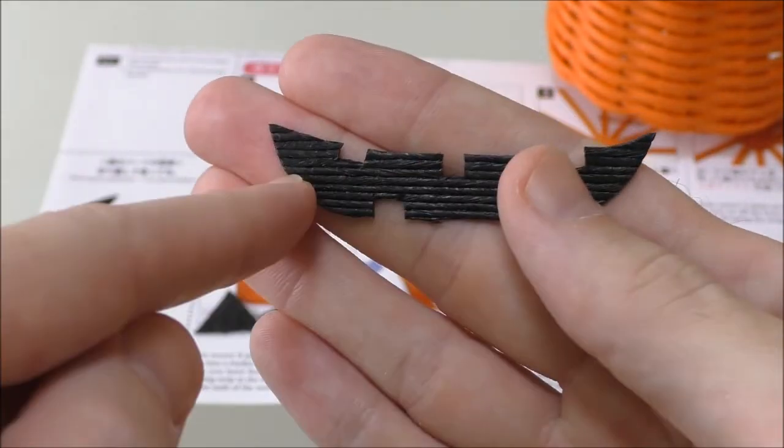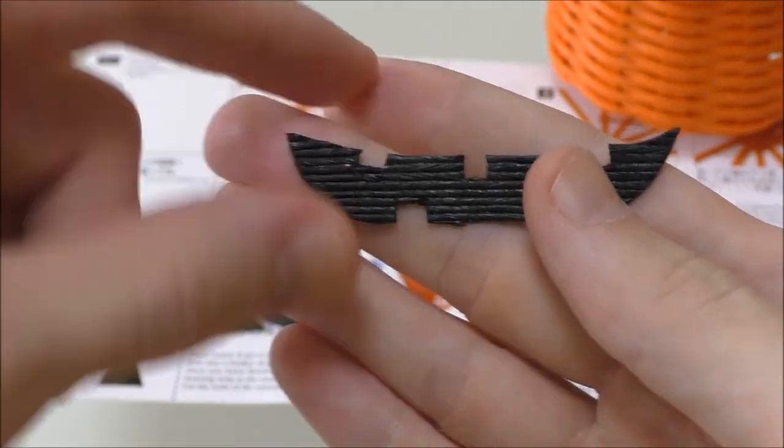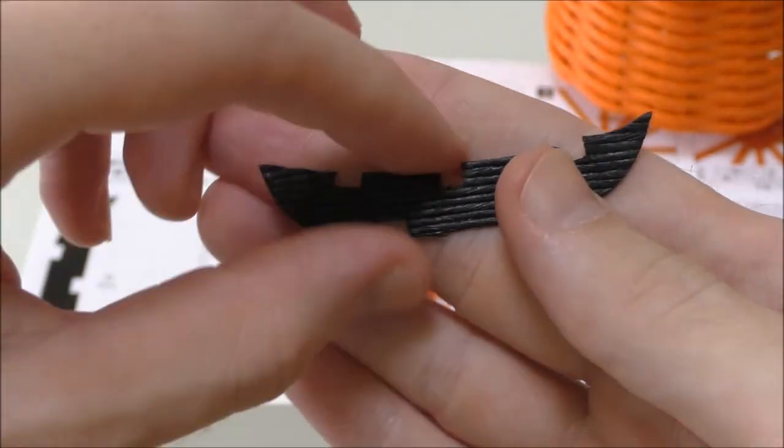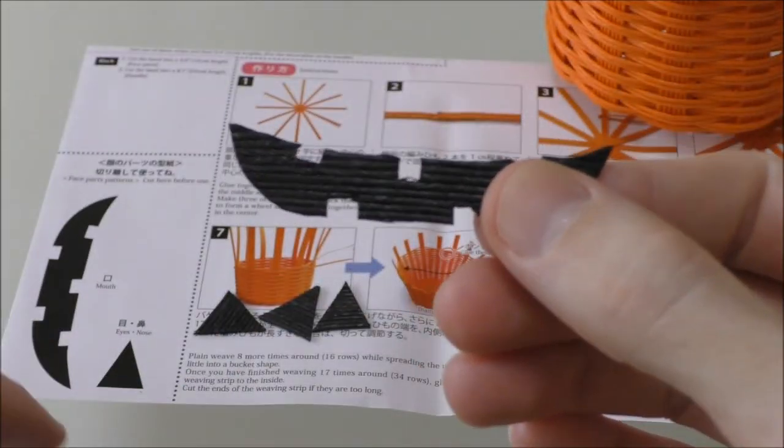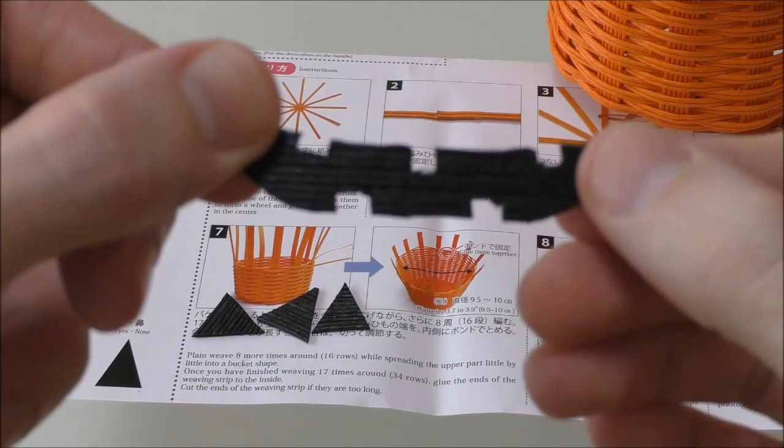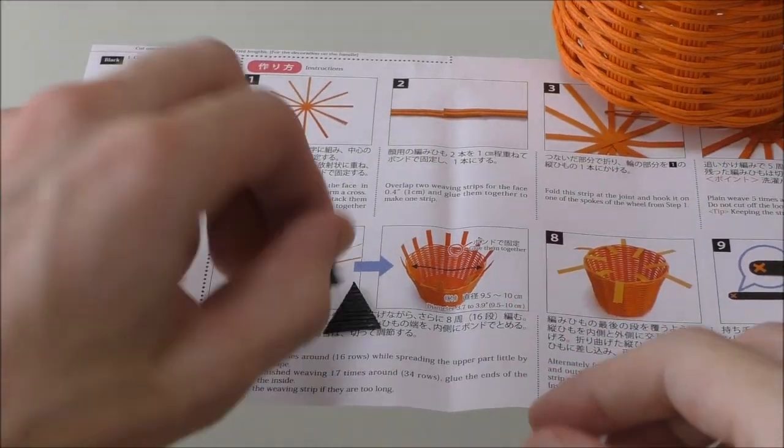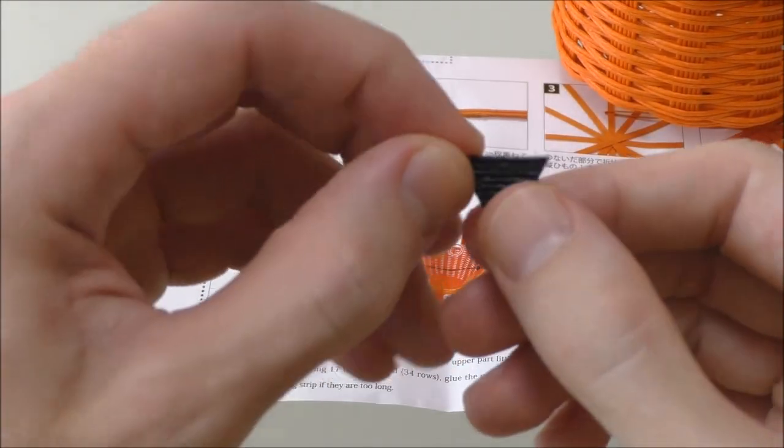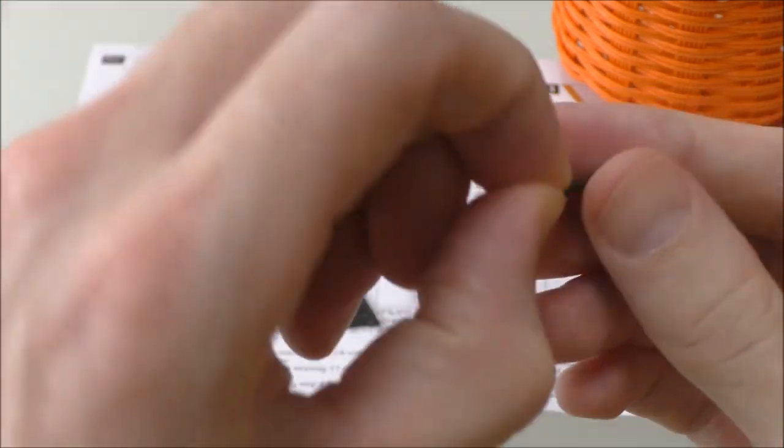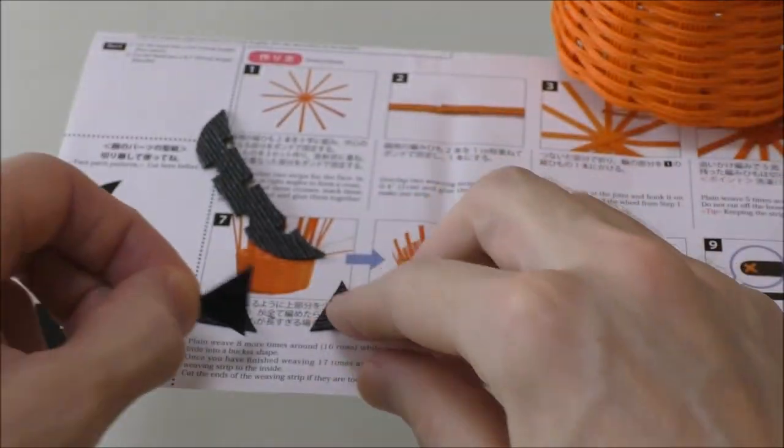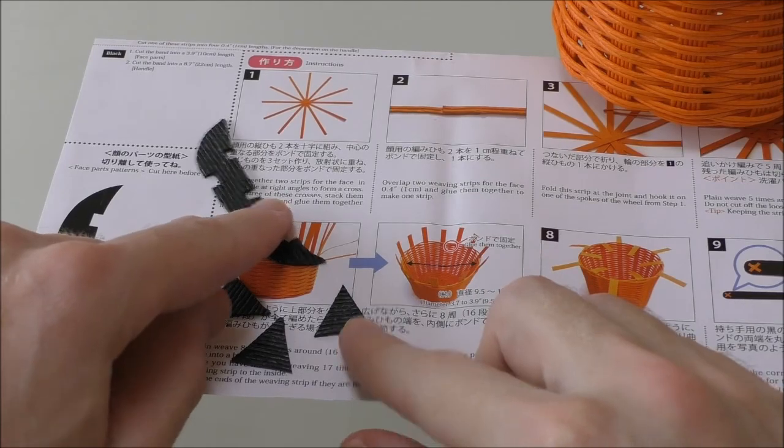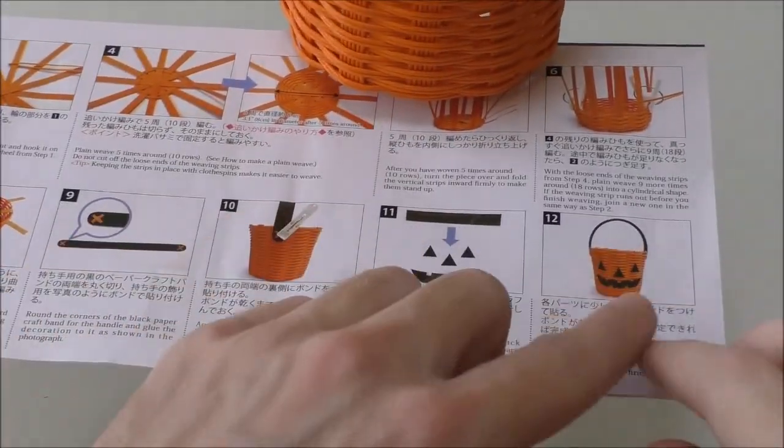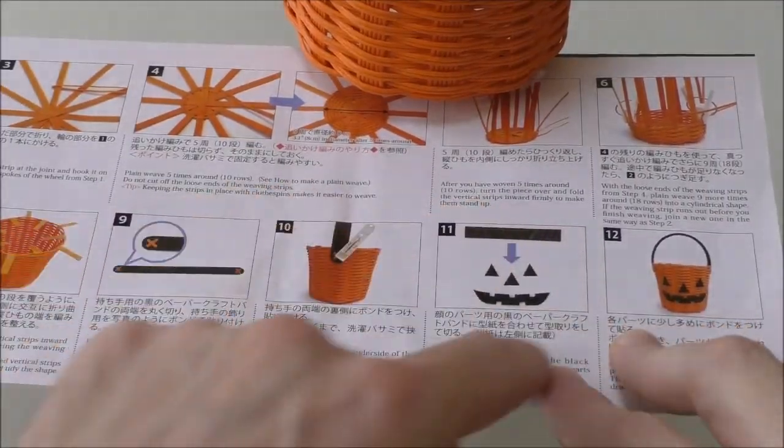So once you've cut the piece to six and a half centimeters you can just remove one of them and then cut it roughly to the shape it is on the instructions to get the mouth. The triangles, you can just measure these and then flip them over and use them as a stencil till you have all three. And once you have all three triangles and the mouth all you need to do is to stick them on in this pattern.